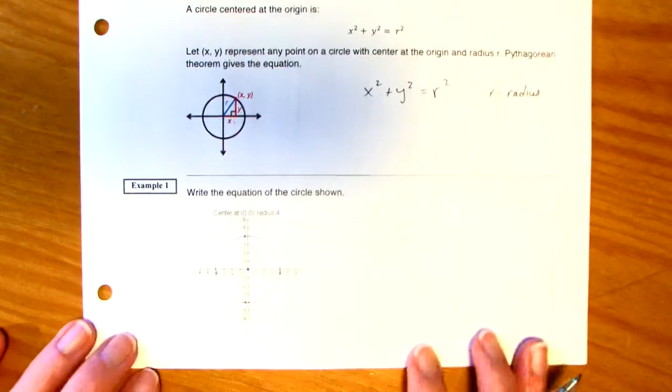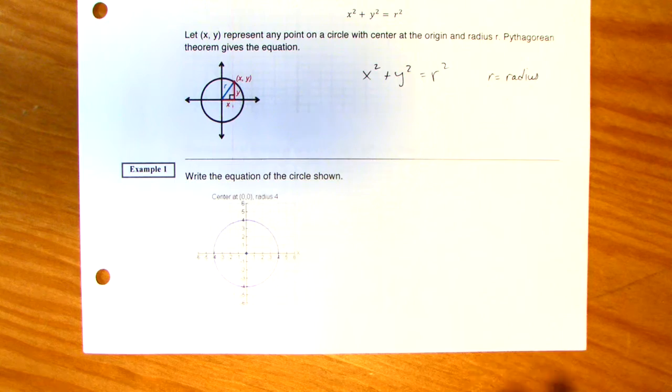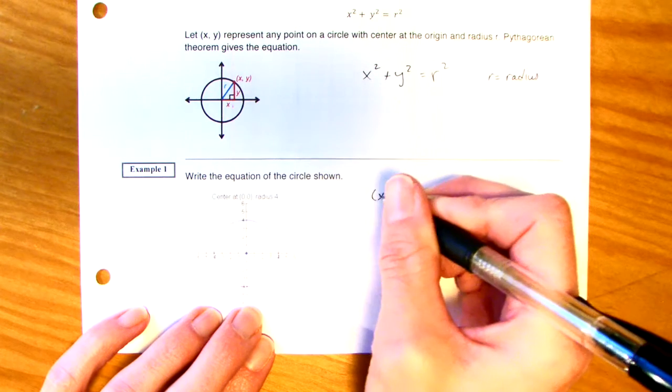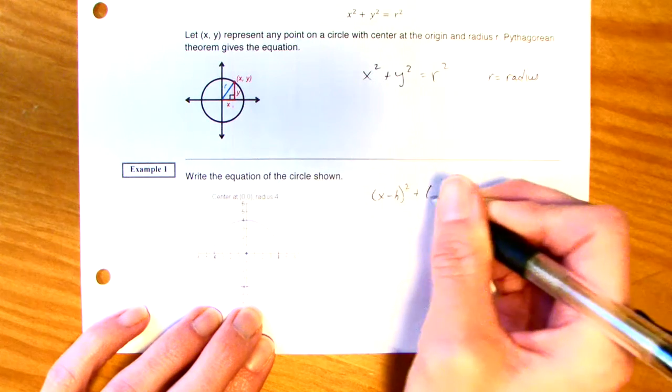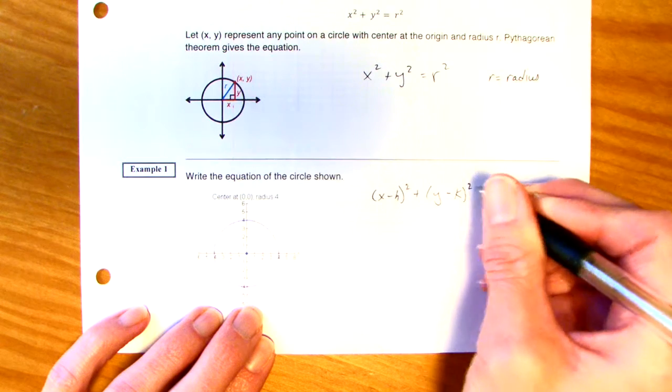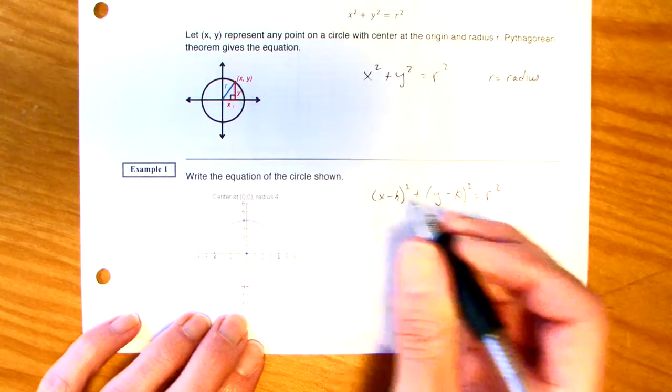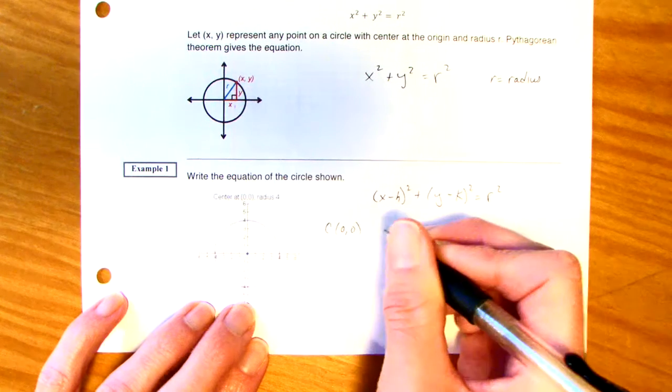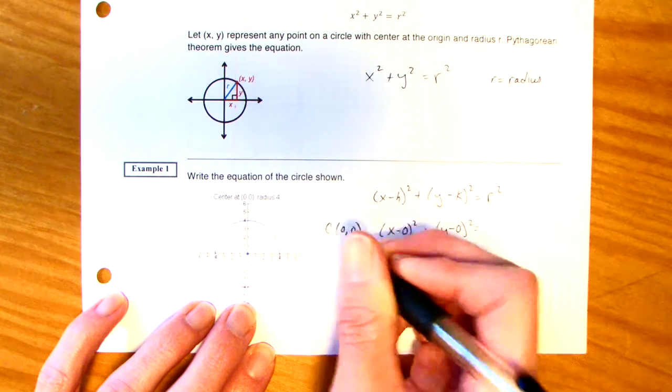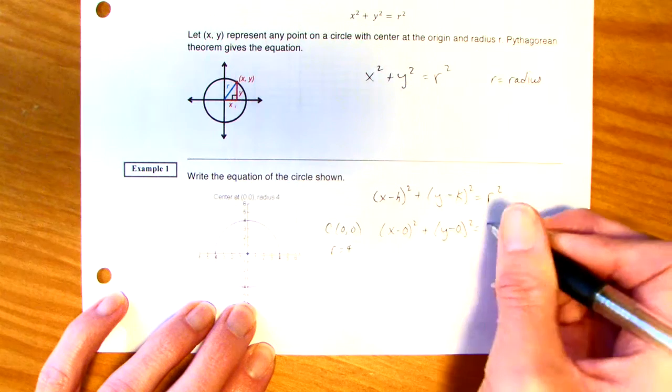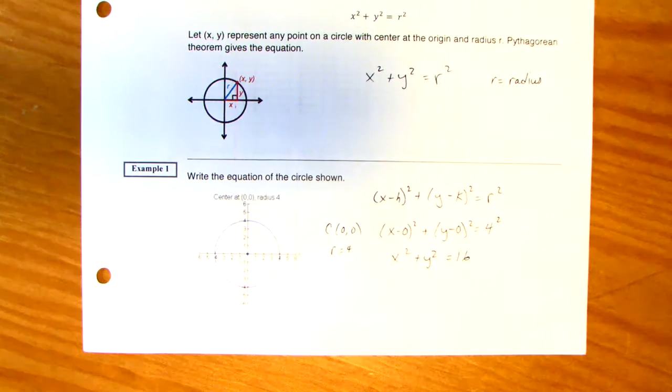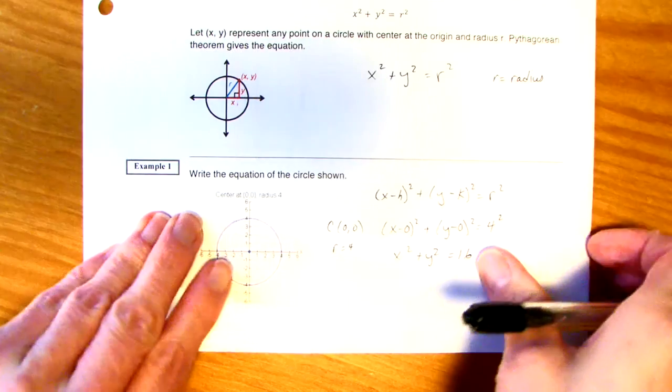Pretty cool, huh? Didn't know where that was going, did you? Alrighty. Write an equation of a circle shown, okay? So, it's at the center of 0, and the radius is 4. So, I'm going to write out the formula, always will, just until I know it by heart. The quantity x minus h squared plus the quantity y minus k squared is equal to r squared. Now, our center is 0, 0. So I have x minus 0 squared plus y minus 0 squared equals, and the radius is 4, 4 squared. So, this is just going to be x squared plus y squared is equal to 16. There it is.